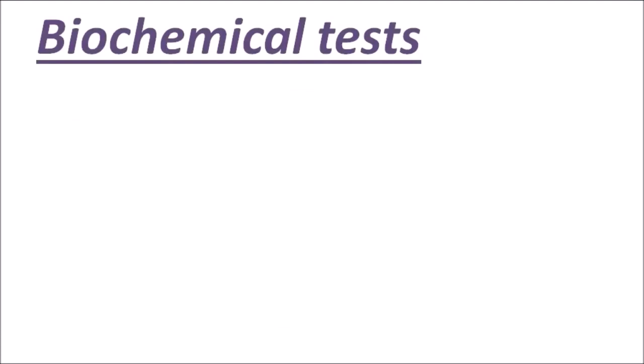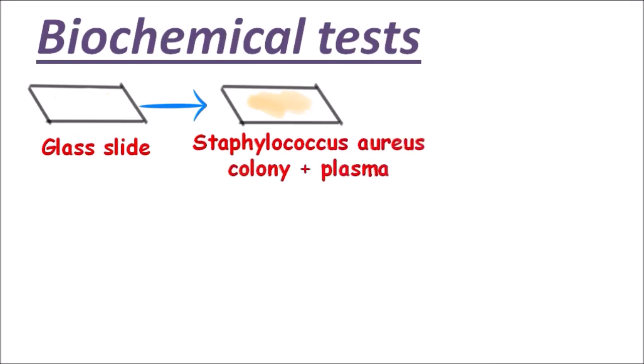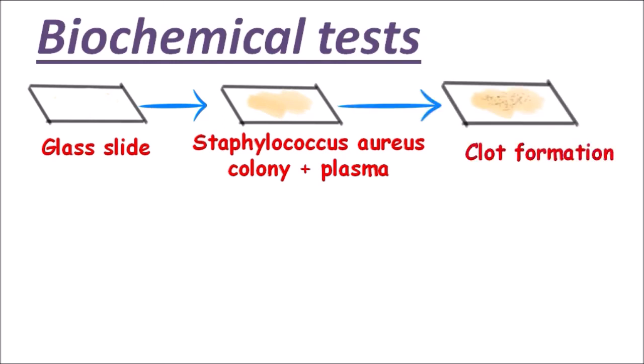There is another test known as the slide coagulase test, in which we take a slide, place Staphylococcus aureus colonies on it, and then add plasma. After this, clot formation occurs due to the bound coagulase or clumping factor in the bacterial cell wall.